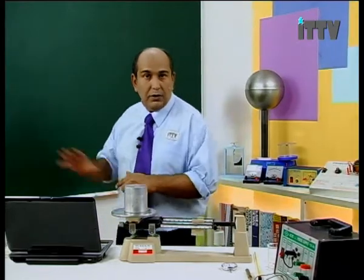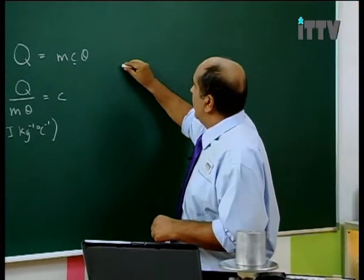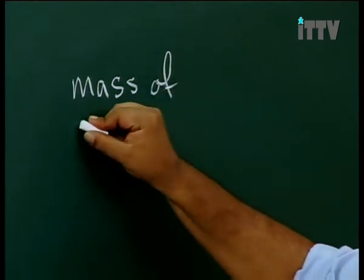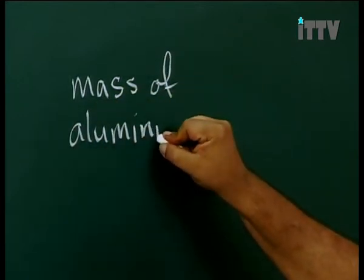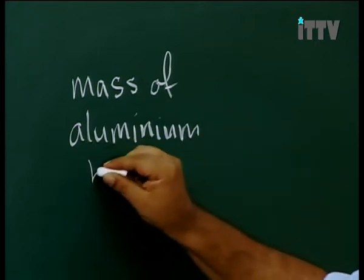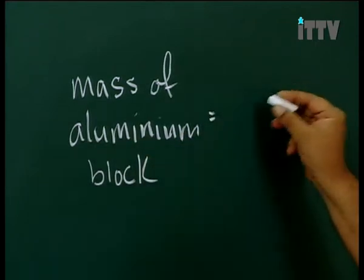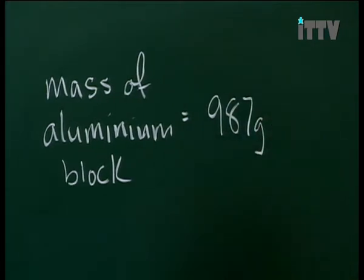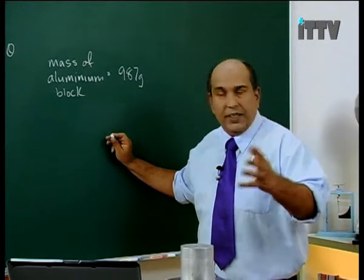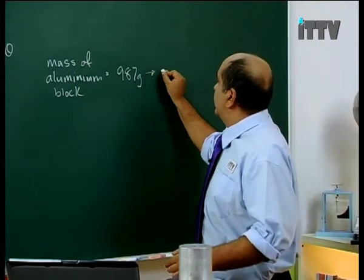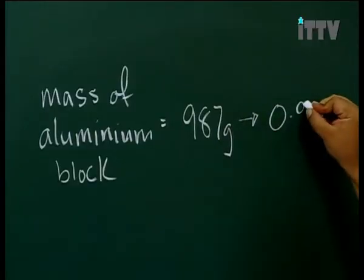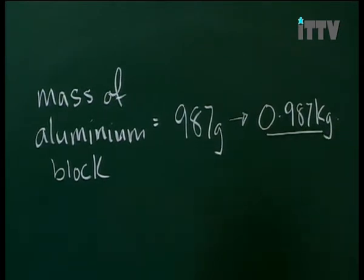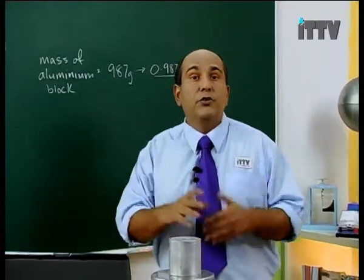Let's put this down on the board. Mass of aluminium block: 987 grams. We need to use it in kilograms, so let's convert it straight away — that is 0.987 kg. That way, there's no chance of making a mistake later on when you do your calculation.